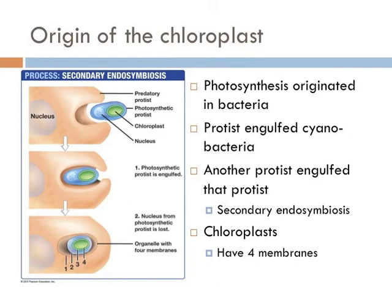That eukaryote held the cyanobacterium hostage and made it produce sugars. Then our original eukaryotic hero came across and engulfed that eukaryote, yet didn't consume it. This produced a superorganism — a single cell that could produce carbon-containing molecules like sugar and could break it down with extraordinary efficiency. And plants were set to take over the world.